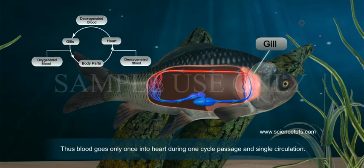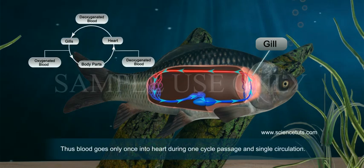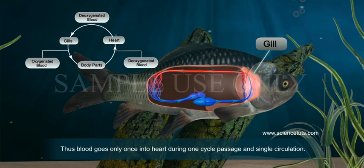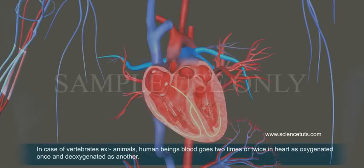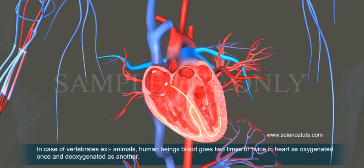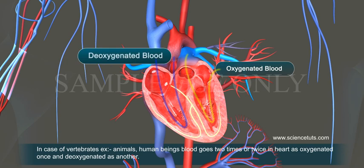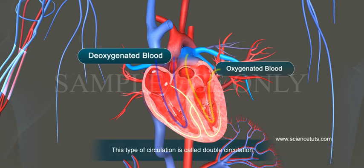Thus, blood goes only once into the heart during one cycle, which is called single circulation. In the case of vertebrates, for example humans, blood goes twice into the heart — once as oxygenated and once as deoxygenated. This type of circulation is called double circulation.